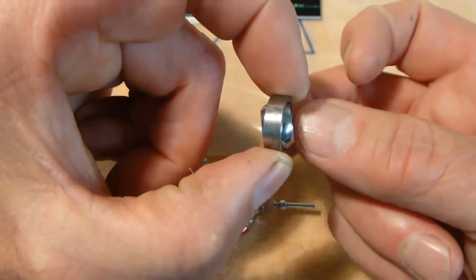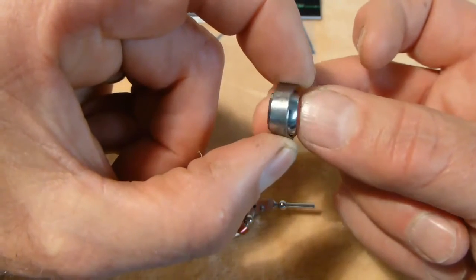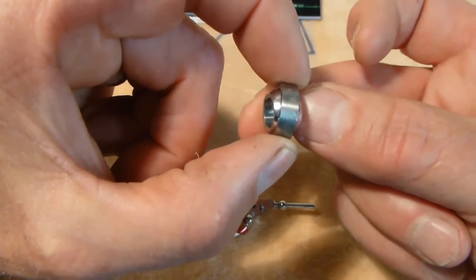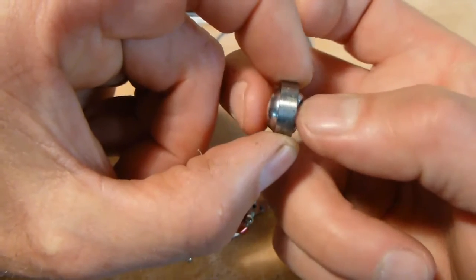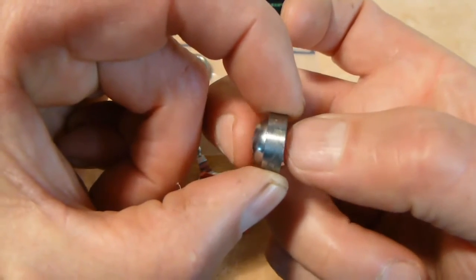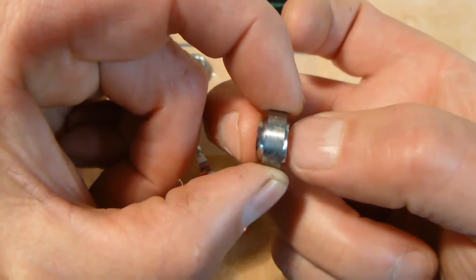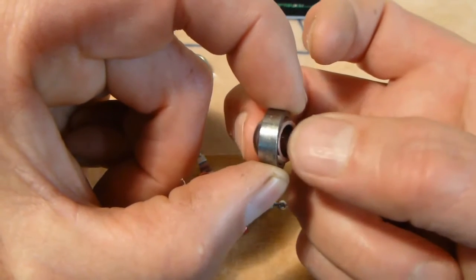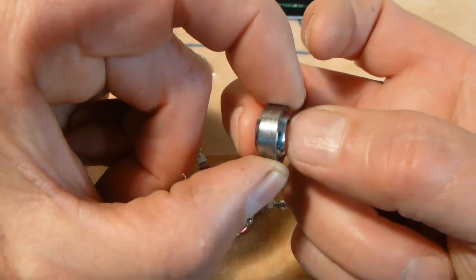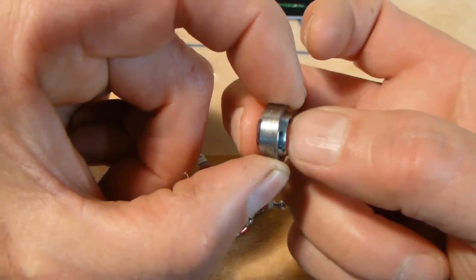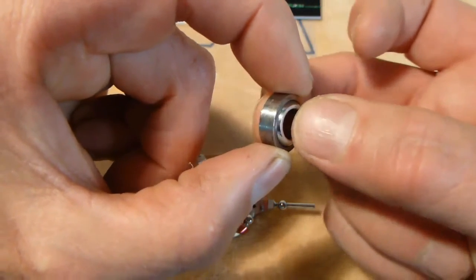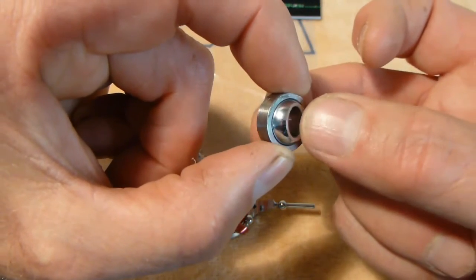The first problem is with this swivel bearing. This is actually brand new and hasn't even been on the helicopter yet. I don't know if you can see that or not, but you can see here the ball is quite loose in the outer race. This is just not acceptable. You're going to get a lot of play and wobble with the swash plate.